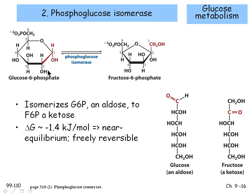Phosphoglucose isomerase rearranges glucose-6-phosphate — a six-membered ring — into fructose-6-phosphate, a five-membered ring, while the phosphate remains on the sixth position. The free energy change is very close to zero, making this freely reversible. Glucose is called an aldose because it has an aldehyde group; fructose is called a ketose because it has a carbonyl carbon.